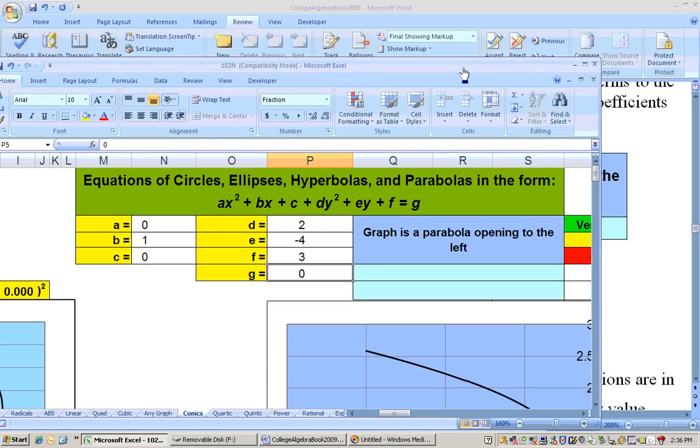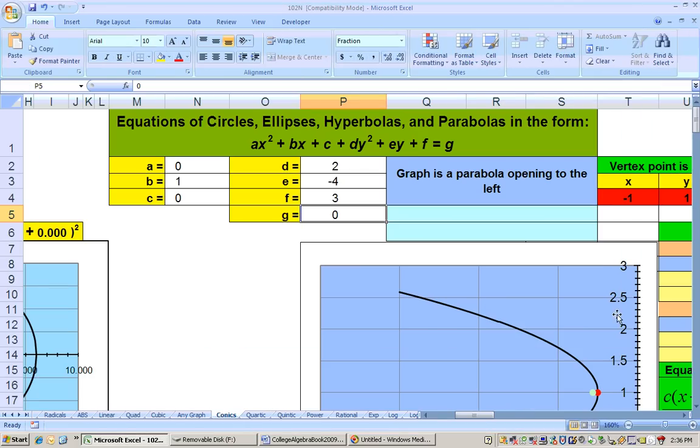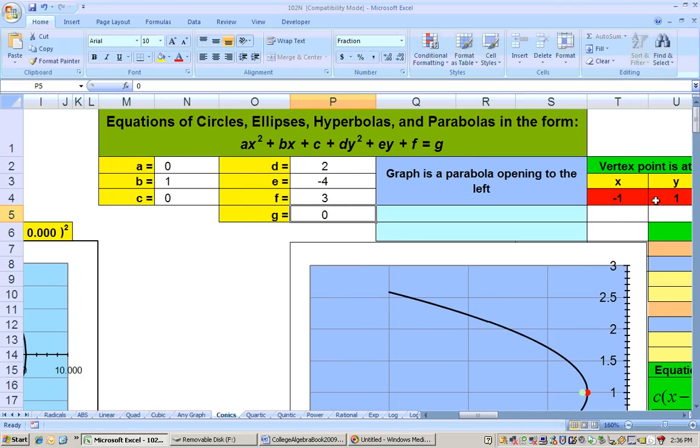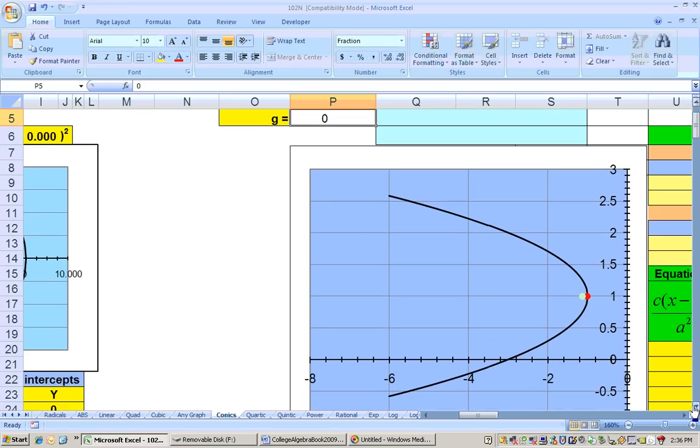And now if we take a look at this thing, let's take a look at it. And we see that here's the vertex point. It's at (-1, 1). Negative 1, 1. And we can see the vertex point right here at (-1, 1). Opening to the left. Not a function, but it does open to the left. There's a vertex point at (-1, 1). So that's one way of doing it.